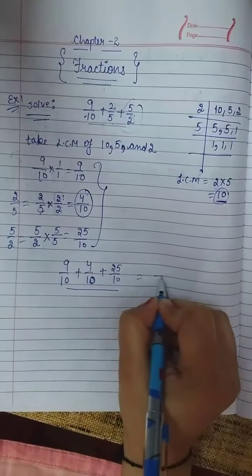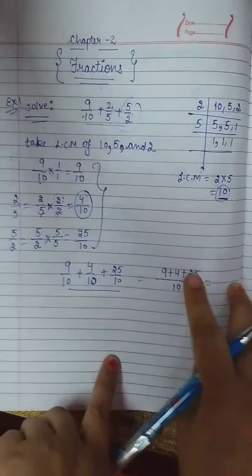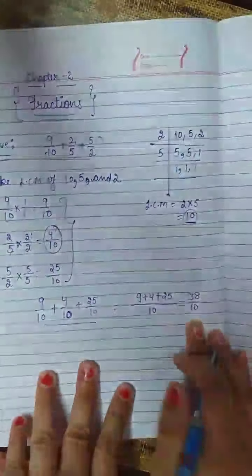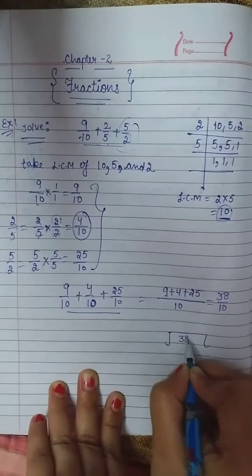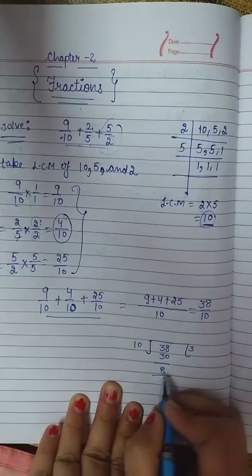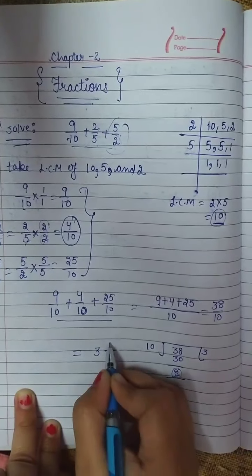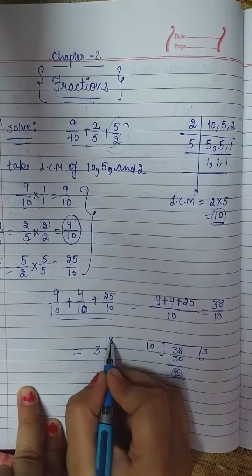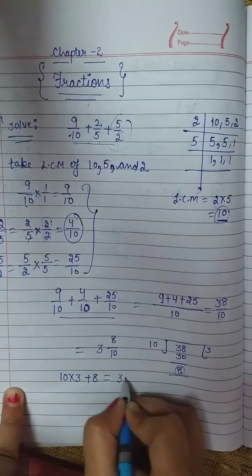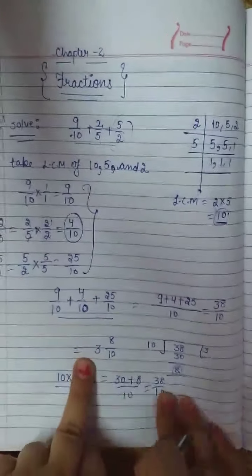Now the denominator is the same. Take common denominator 10: 9 plus 4 plus 25 over 10. That gives 25 plus 4 equals 29, and 29 plus 9 equals 38 upon 10. Write it as a mixed fraction: divide 38 by 10 — 10 threes are 30, remainder 8. So the mixed fraction is 3 and 8 by 10. Verification: 10 × 3 + 8 = 30 + 8 = 38 upon 10. This is our answer.